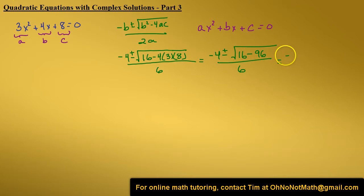Simplifying further we have negative 4 plus or minus the square root of I times the square root of 80 all over 6. We can simplify this radical.